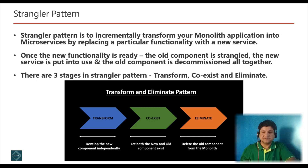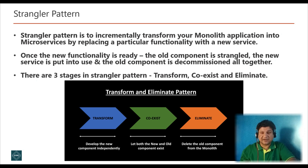There are three stages in the strangler design pattern: first is transform, then coexist, and finally eliminate. You need to have a process in place to streamline this transition from monolithic to microservices. The old system is put behind an arbitrary façade, and over time external replacement services for the old system are added behind that façade. The strangler application consists of two types of services: services that implement functionality previously residing in the monolith, and services that implement new features.